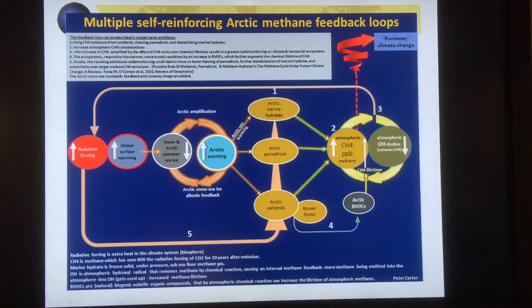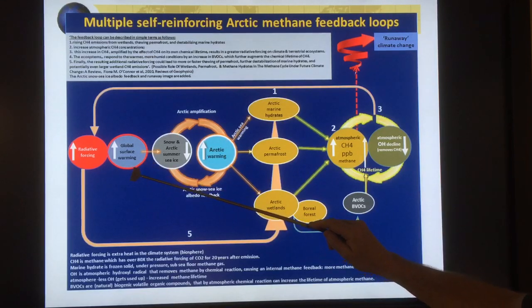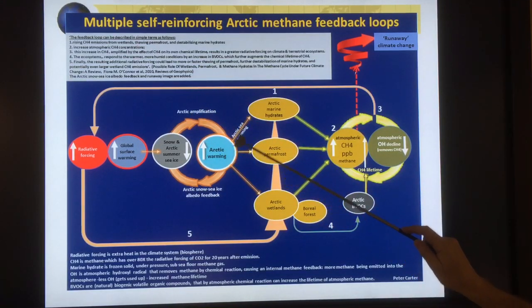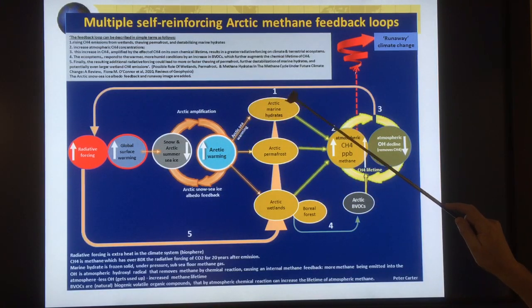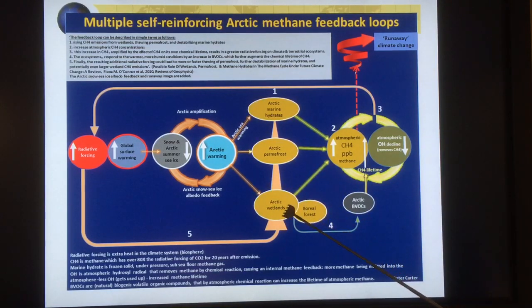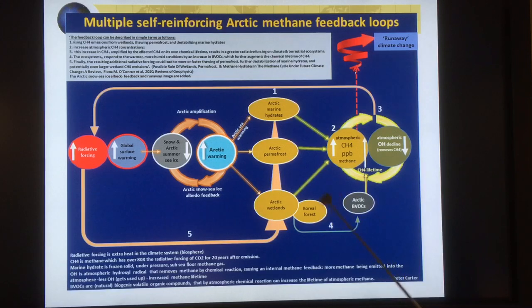This is another view of the feedbacks: global surface warming leads to snow and ice in the Arctic declining, which feeds back into Arctic warming. The effects include hydrates in the sediments coming up, terrestrial permafrost thawing, and permafrost on sea floor sediments. Arctic wetlands are created and emit greenhouse gases as the permafrost thaws, and we're also getting declines of boreal forests from diseases and fires.